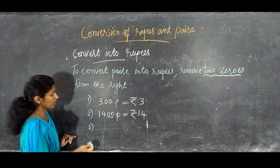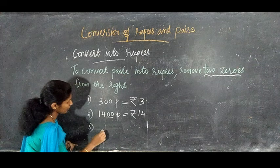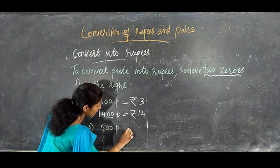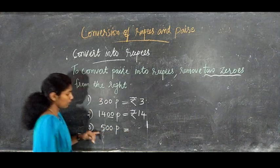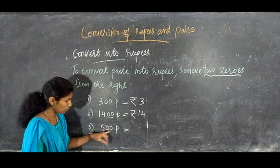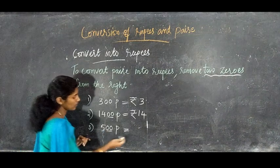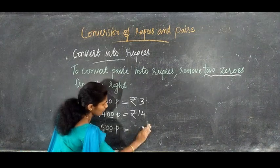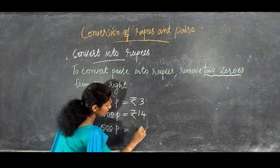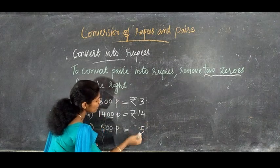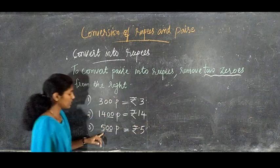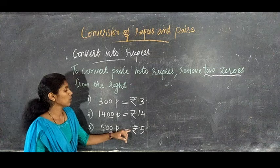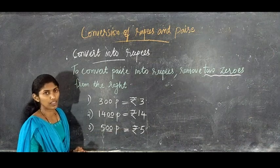Next, 500 paisa — we remove the 2 zeros, leaving only 5, and put the rupee symbol. So 500 paisa equals 5 rupees. Clear.